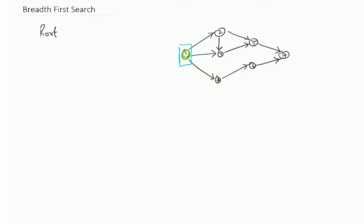What are the neighbors? They are 2, 3 and 4. You will visit all these 3 nodes — all the nodes which have not been visited before. The root is labeled with level 0. You give levels to each node based on what level it belongs to in the breadth first traversal. All the neighbors of 1 now belong to level 1.